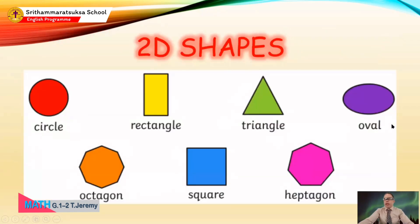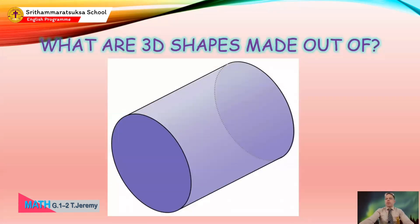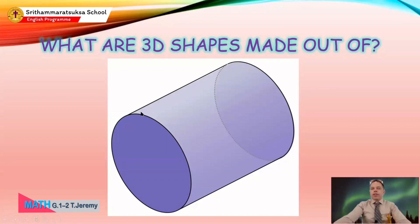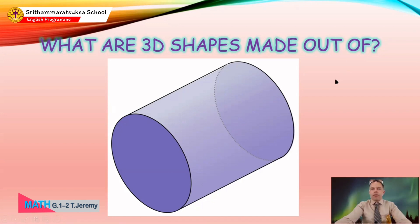Okay, now 3D shapes are made out of different 2D shapes — shapes you know like circle, rectangle, and triangle. What I want you to do next is think about what 2D shapes you can see in these 3D shapes. Do you remember what this one is called? This is a cylinder, right? And what is this cylinder made out of — do you see any 2D shapes in it?